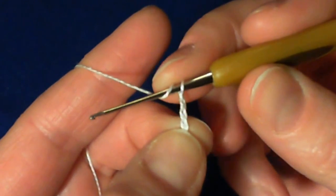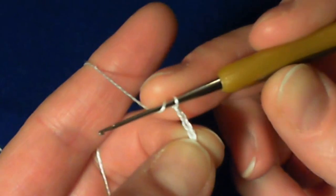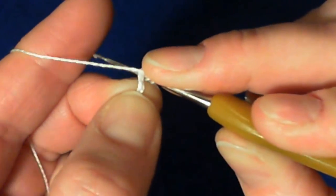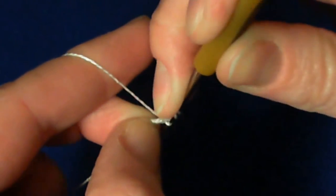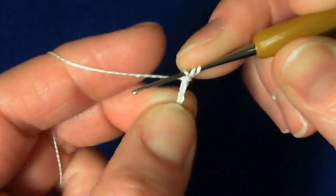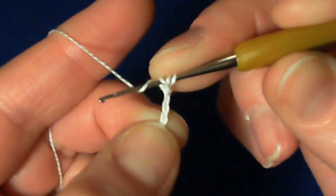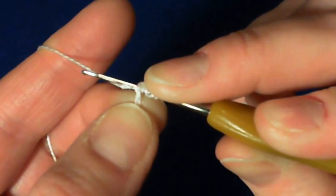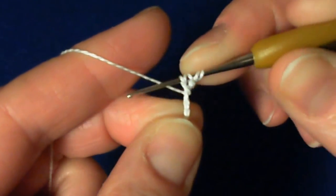Yarn over. Hold this yarn over with the middle finger of your right hand right over here. Bring the hook under the chain in such a way that you can grab the thread, grab the thread and bring it out this way. Again, yarn over, move the thread, the hook under the chain, grab the thread and bring it back.